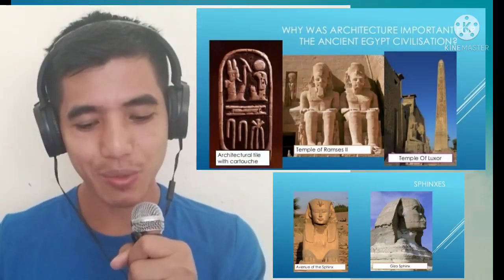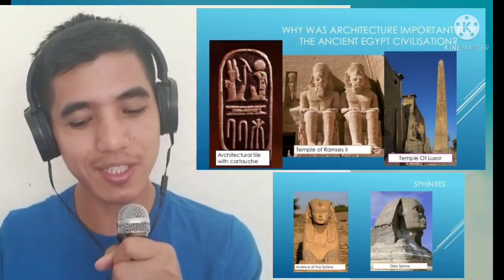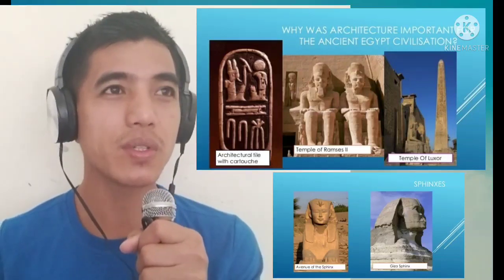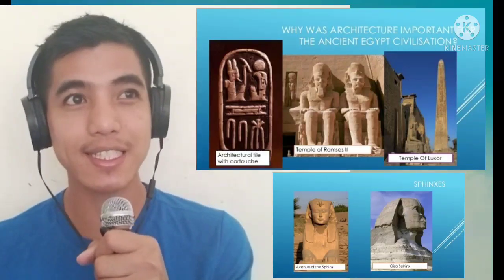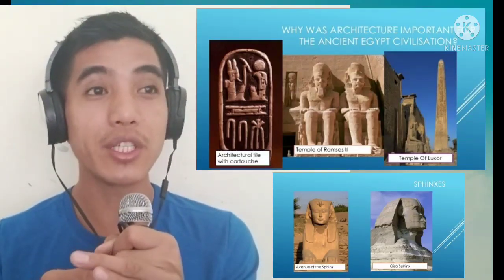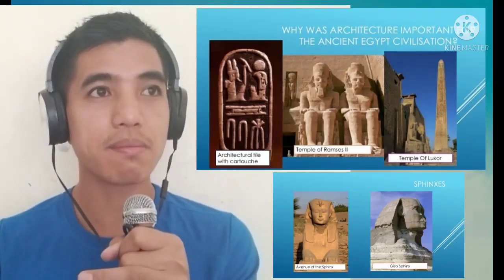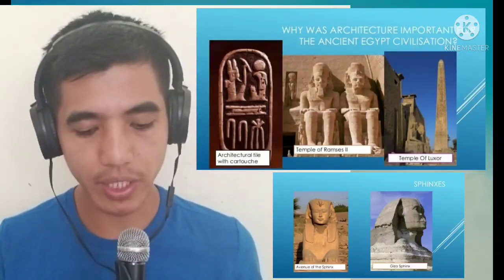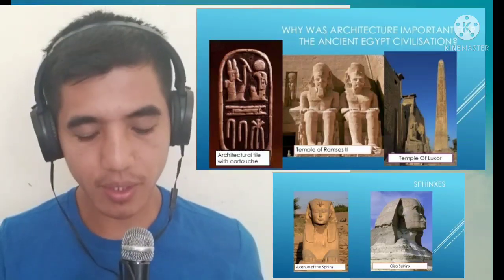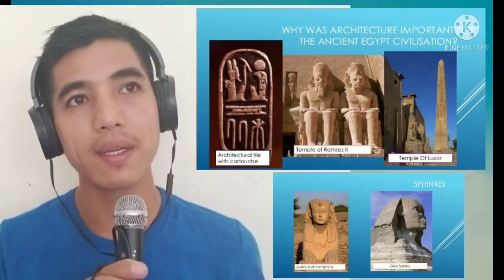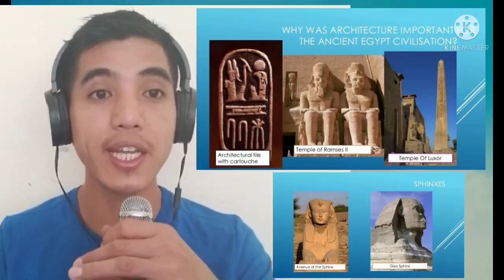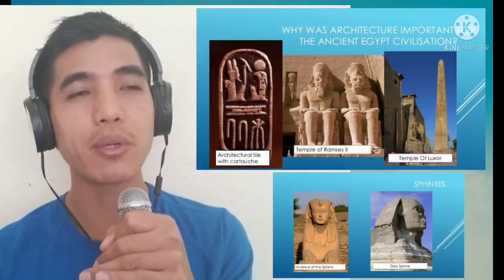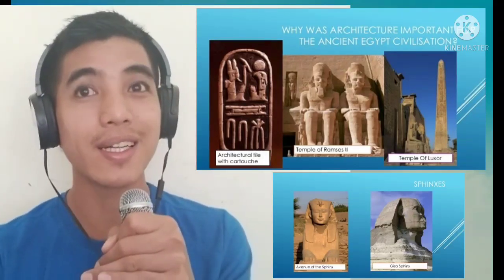Why was architecture important for ancient Egyptian civilization? They built these structures to praise their gods and goddesses, reflecting their religious beliefs. They were also inspired by nature, and built architecture to praise their pharaohs — their kings. Most importantly, we can see their devotion to their goddesses through these structures.